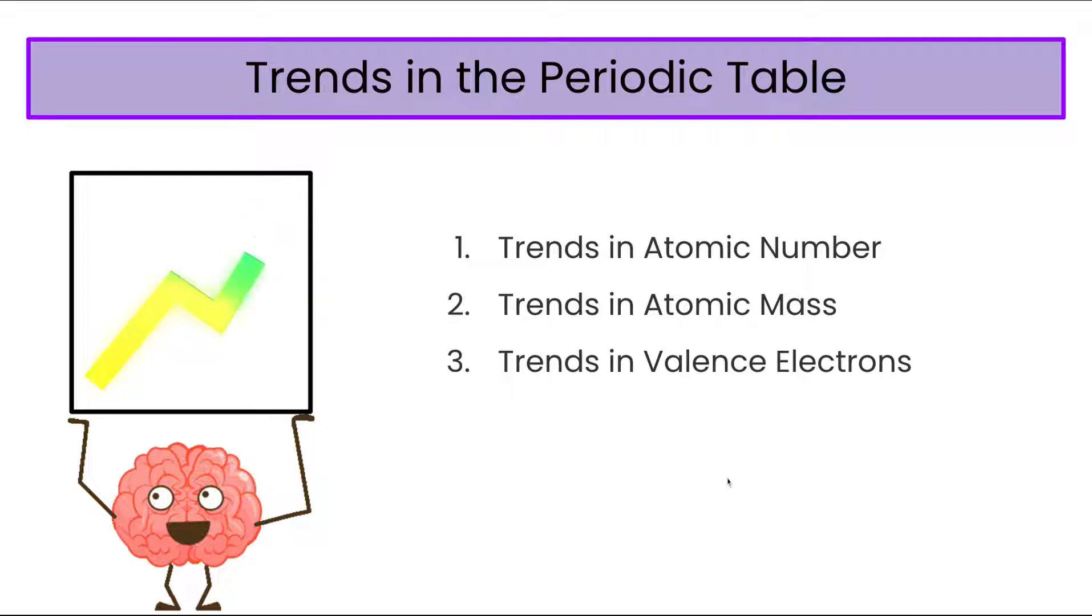So what we're going to do in this video is look at three simple trends. We're going to look at the trend in atomic number, the trend in atomic mass, and then most importantly, we're going to look at the trends in the valence electrons, because that is going to be important for later lessons in this unit. So let's dive in and let's look at atomic number.